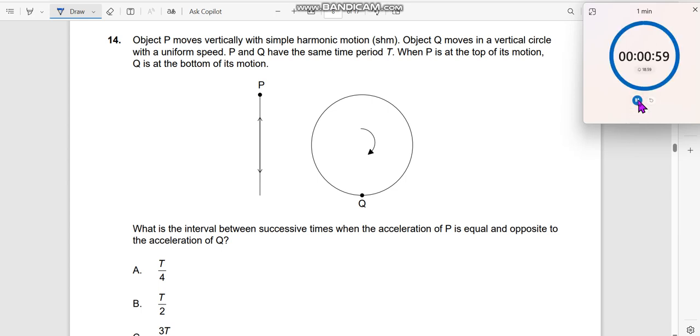Question number 14: An object P moves vertically with simple harmonic motion. This is moving with simple harmonic motion along the vertical y-axis, like an oscillation of a spring. Then object Q moves in a vertical circle with uniform speed.